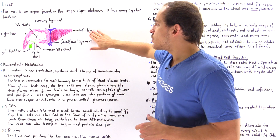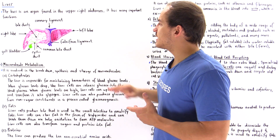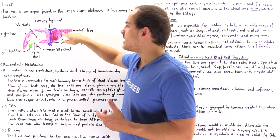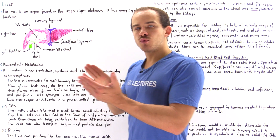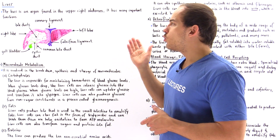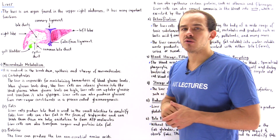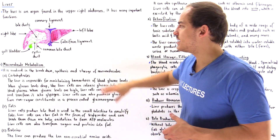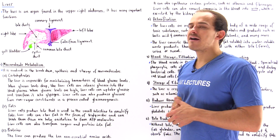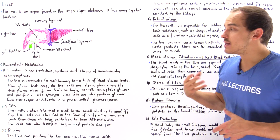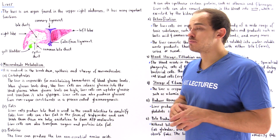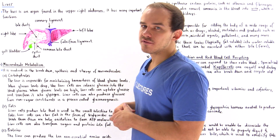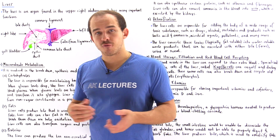The liver consists of the left lobe and the right lobe, and in between the lobes we have our ligaments. We have the coronary ligament and the falciform ligament, and these ligaments play a role in connecting our liver to other parts of the body.